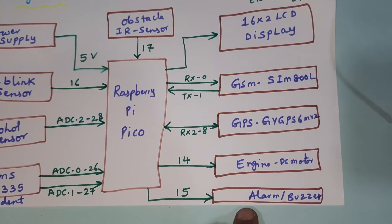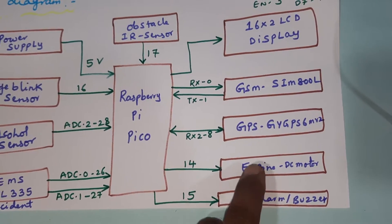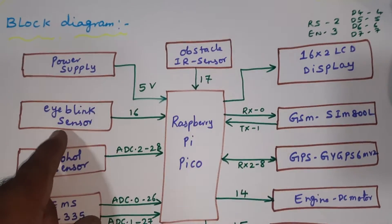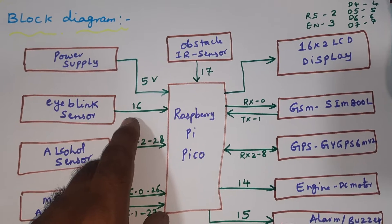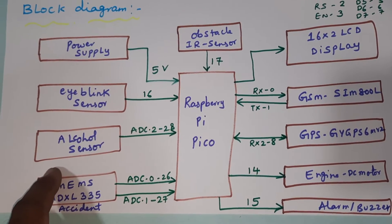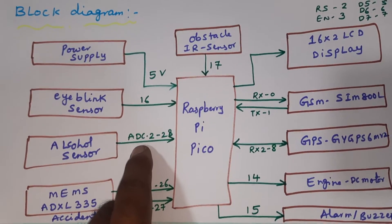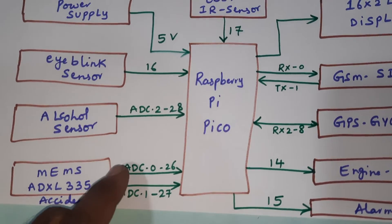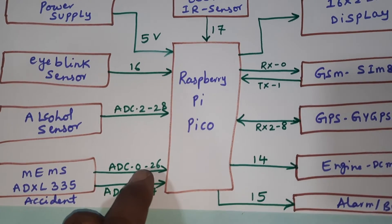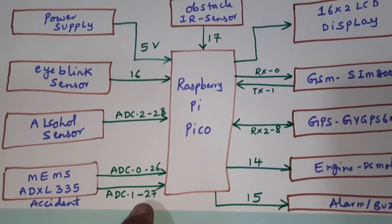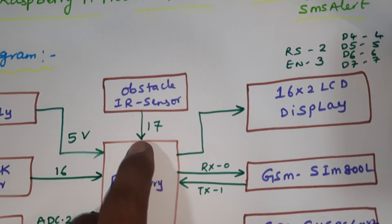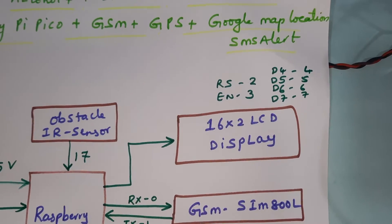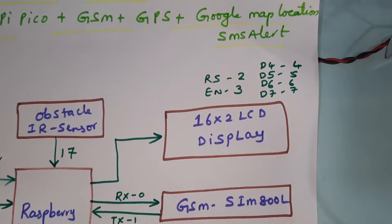The output units are an alarm, engine, and a 16x2 LCD display. The iBlink sensor is connected to GPIO pin 16. The alcohol sensor uses ADC, connected to ADC0 pin 28. The MEMS accelerometer is connected to ADC0 and ADC1 on pins 26 and 27. The obstacle sensor is connected to pin 17. The 16x2 LCD display is connected via RS, Enable, D4, D5, D6, D7 on pins 2 through 7.